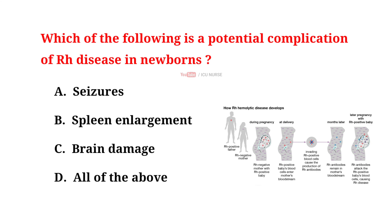Which of the following is a potential complication of Rh disease in newborns? A. Seizures. B. Spleen enlargement. C. Brain damage. D. All of the above. Drop your answers in the comment section below.